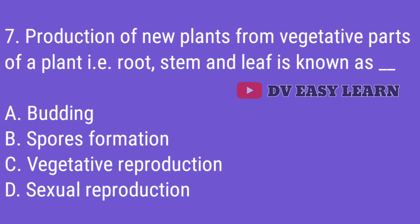Q7. Production of new plants from vegetative parts of a plant — i.e., root, stem, and leaf — is known as?